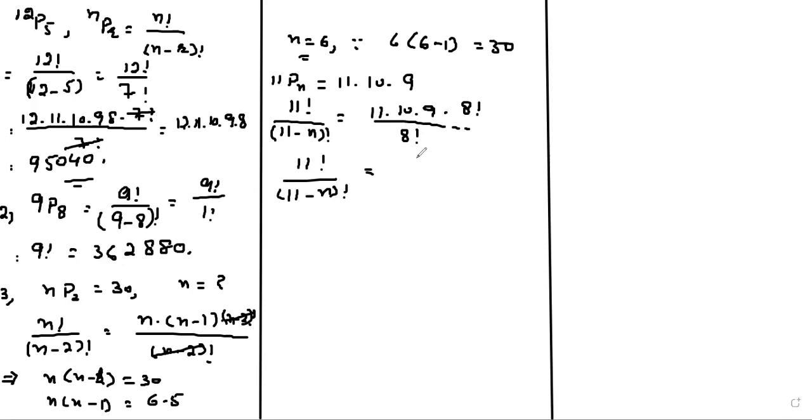Which is equal to 11 factorial divided by 8 factorial. Now we can see 11 minus N equals to 8. This implies that N equals to 11 minus 8, means N equals to 3, which is our required answer.